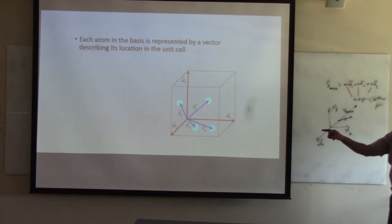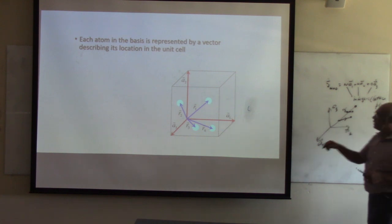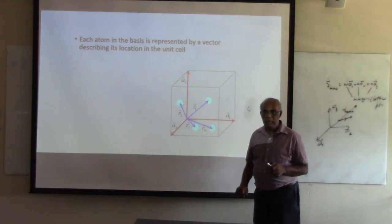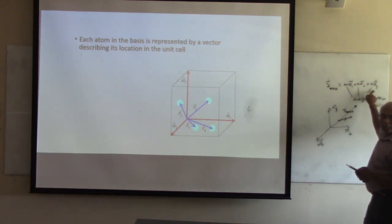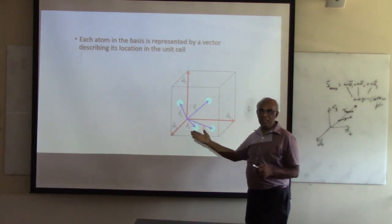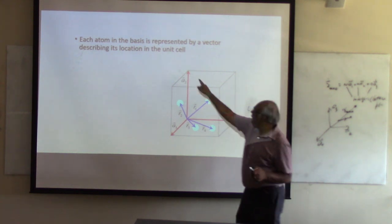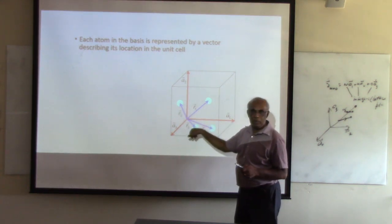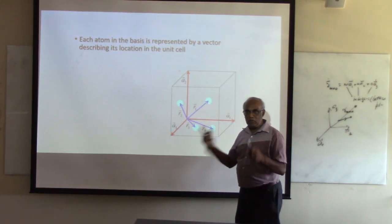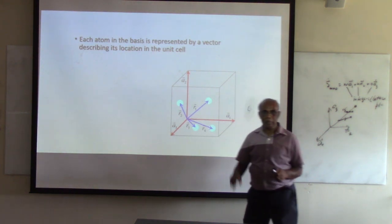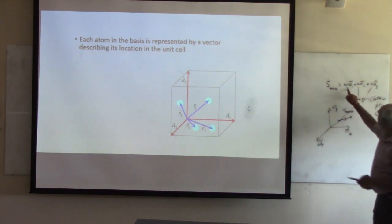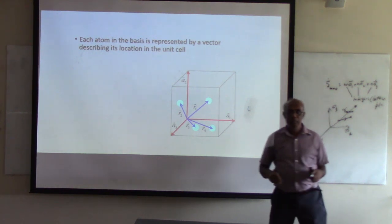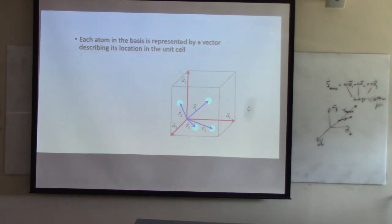If I want to define the coordinates for the basis atoms inside the unit cell, the coordinates written in terms of A1, A2, A3 must be fractions — less than one — because the basis atoms are inside the unit cell. Please remember this difference: integers for lattice points, fractions for basis coordinates.